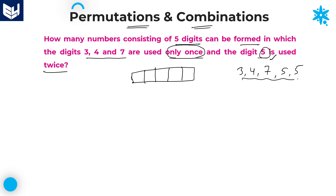If you observe carefully, total 5 digits are there. I am not talking about 5 different digits — I am talking about 5 digits, whether that particular digit is repeated or not. Here, only 1 digit is repeated, not all the digits. By using these 5 digits, how many numbers can we form? That is the question.